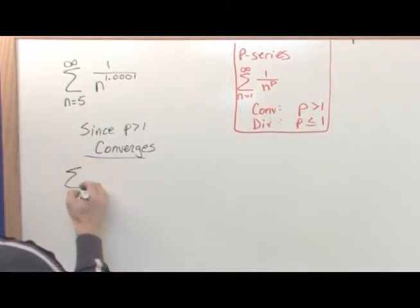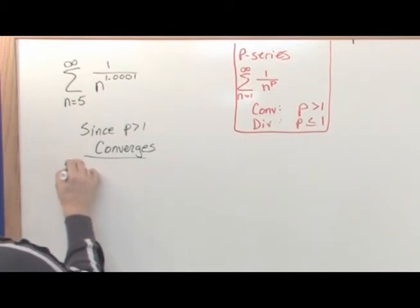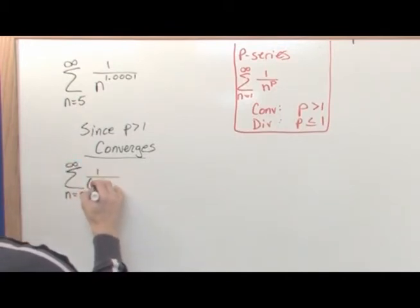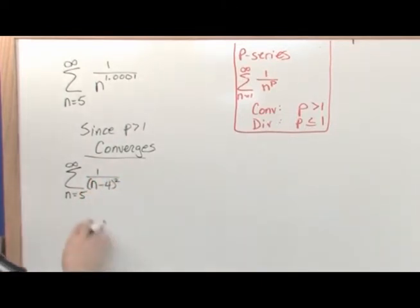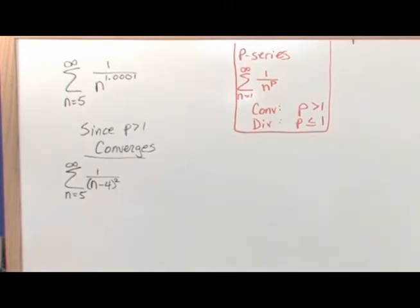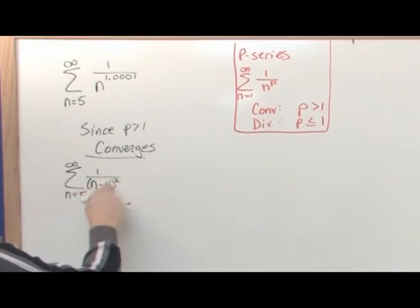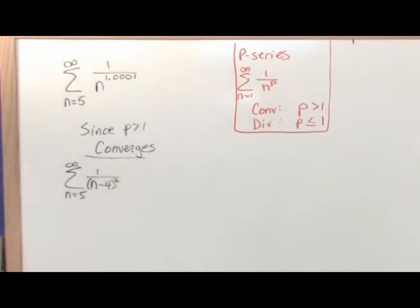Let's do the next problem: the sum from n equals five to infinity of one over (n minus four) squared. These are the elements of the series I'm adding up, starting at n equals five going to infinity. This doesn't really look like a p-series — it doesn't look like one over n to the p because you have this minus four in there. It doesn't look like a geometric series either. So you might think you can't use either of those.